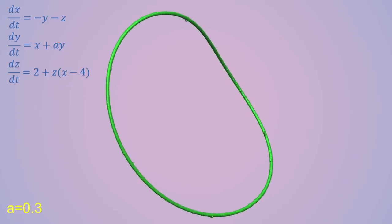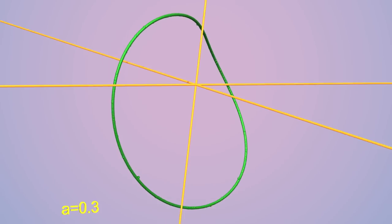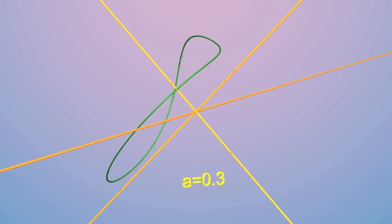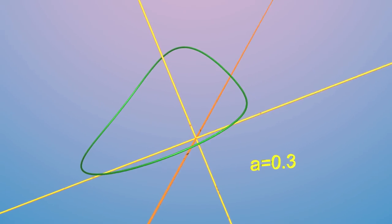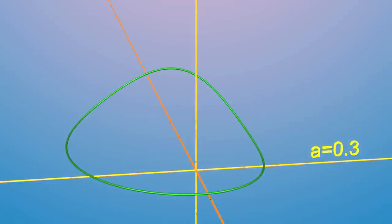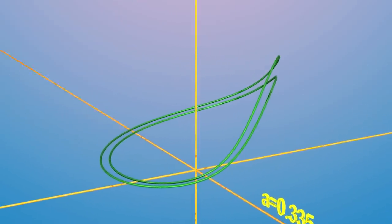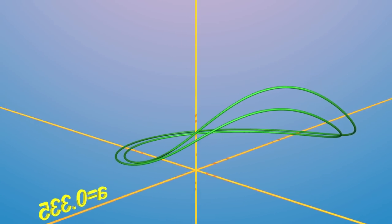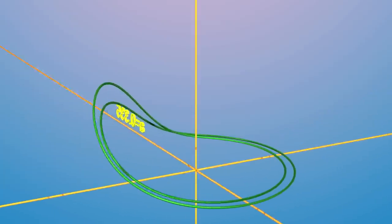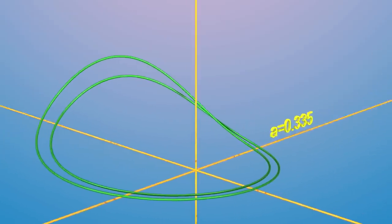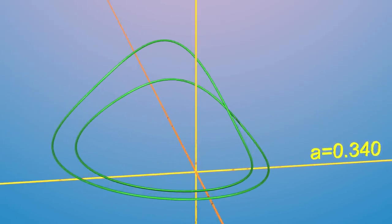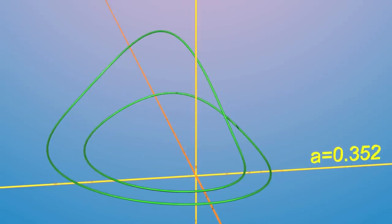Let's slowly change the parameter A. We see that for A equal to 0.335, the periodic trajectory splits apart. Still no chaos, but now the periodic trajectory is about twice as long.